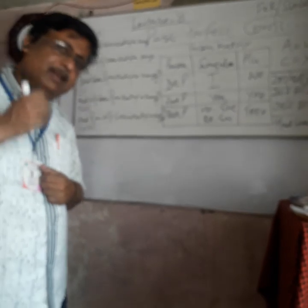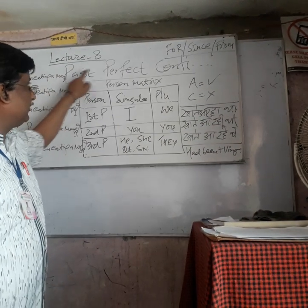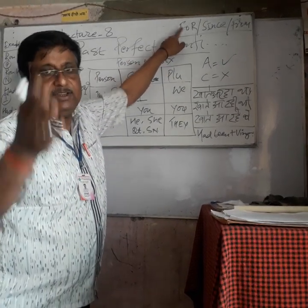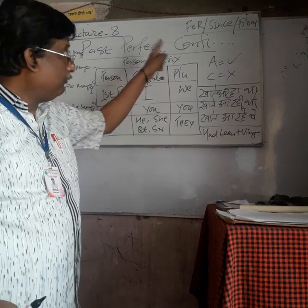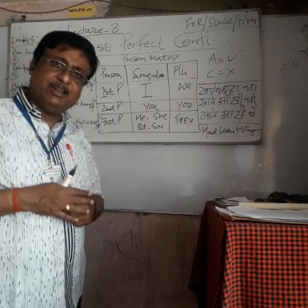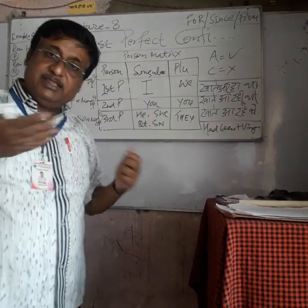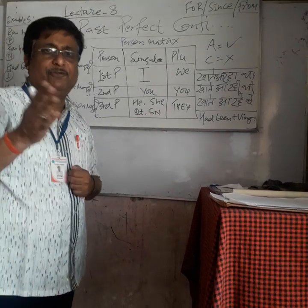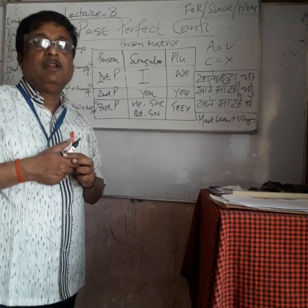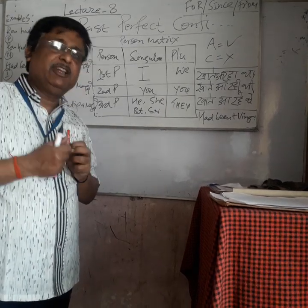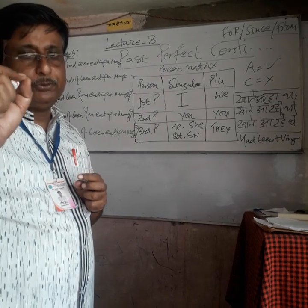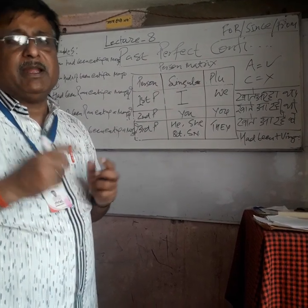In the same manner, we will use 'for', 'since', and 'from' in the past perfect continuous. These are prepositions. 'For' is used for a period of time, whereas 'since' is used for a point of time.